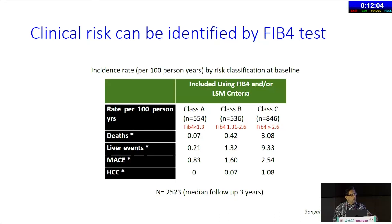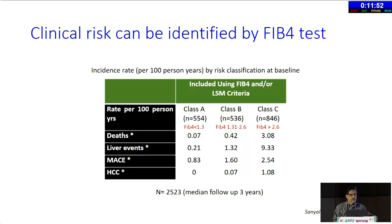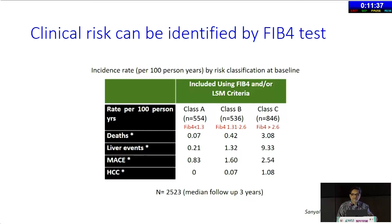At least in the West, variceal hemorrhage has become much less common than it used to be — part of it is because we have become much better at primary prophylaxis. In many places there's concern that fellows in training are not doing enough endoscopy, whereas back in the day it was literally every night we had to come in to scope a variceal bleeder.